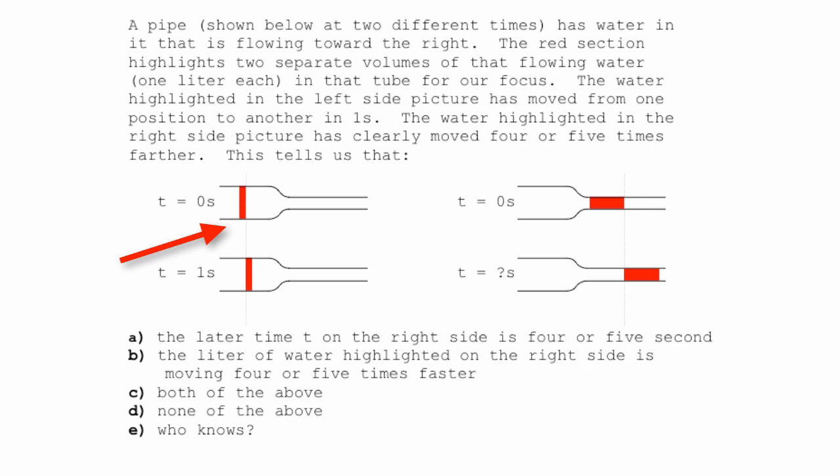So here's t equals zero seconds. Here's t equals one second. I showed you the same liquid at two different times. The red section highlights two separate volumes of that flowing water. This is one liter of water. When it gets into that smaller cross-sectional area pipe, that's the one liter of water. That's where it is right now. Because when it gets into that smaller pipe, it gets spread out because the cross-sectional area is not as big. And it's an incompressible fluid. So its volume has to stay the same.